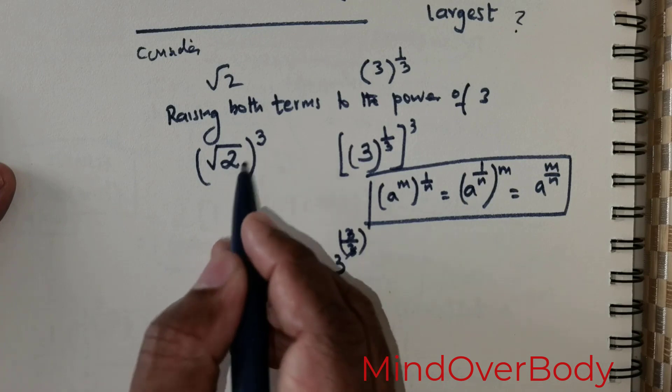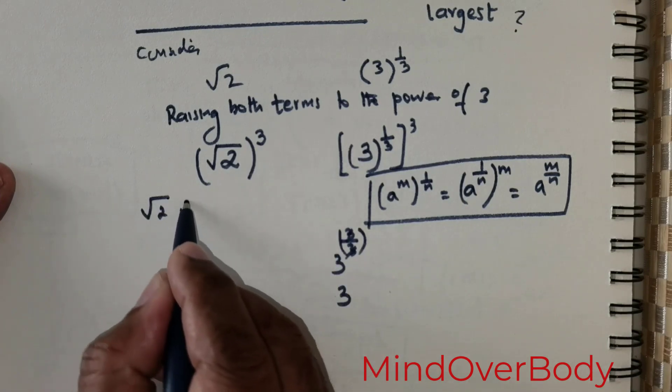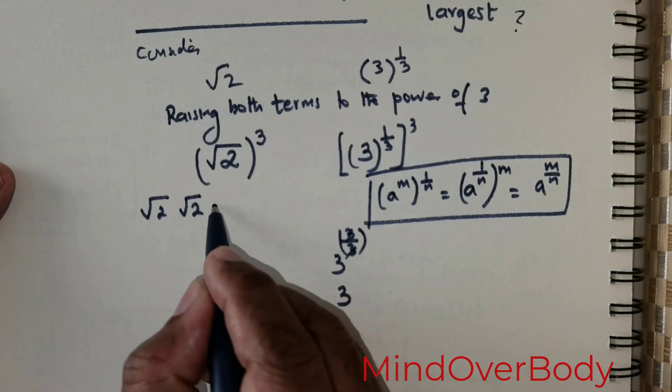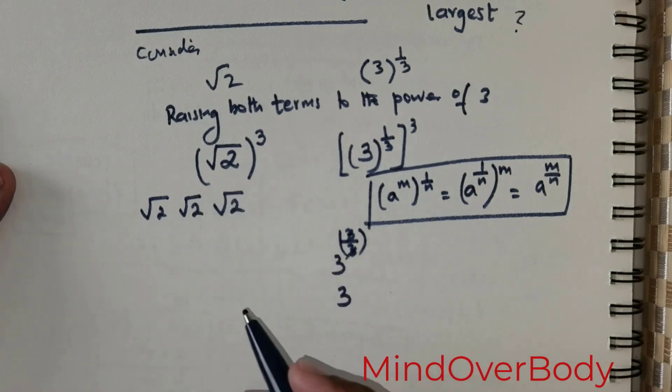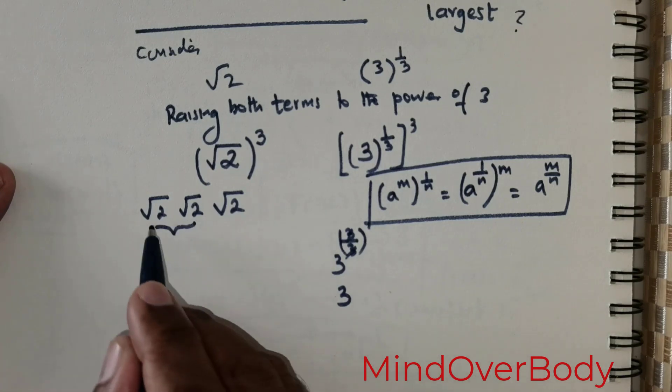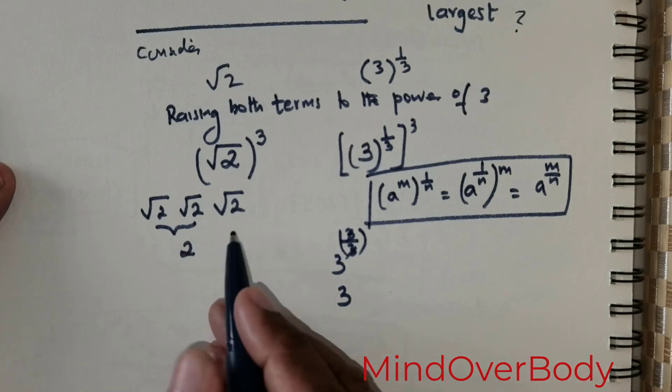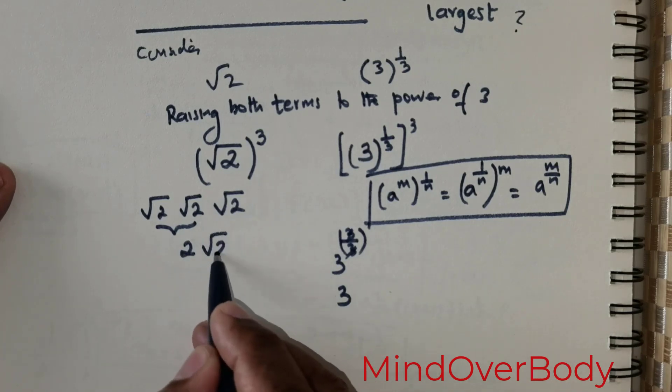Now root of 2 raised to the power 3, what is it exactly? This is nothing but root of 2 multiplied with root of 2 multiplied with root of 2. Now I am clubbing these two components, root 2 root 2. Root of 2 multiplied with root of 2 gives me 2, and what is root 2? Just place it as it is.